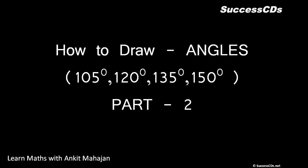Hello everyone, welcome to the next lecture in the series on how to draw angles. In the last one we discussed how to make acute angles like 30°, 45°, 60°, and right angle 90°. In this part we are going to discuss how to draw angles which are obtuse, like 105°, 120°, 135°, and 150°.